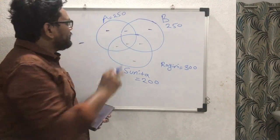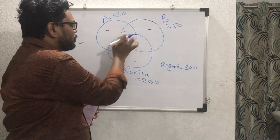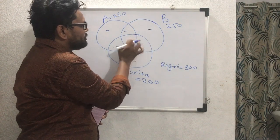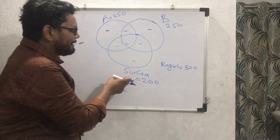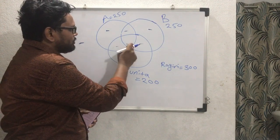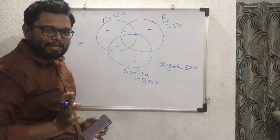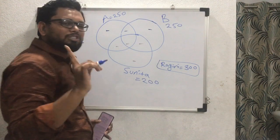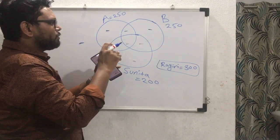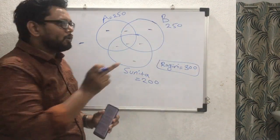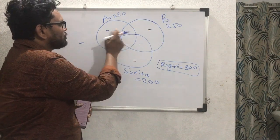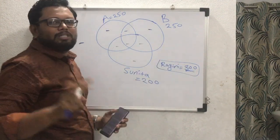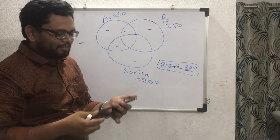Total 500 students. 250 support Proposal A — so these four regions together must equal 250. 250 support Proposal B — these four regions together must equal 250. It is mentioned that 200 students prefer Sunita, so these four regions inside Sunita's circle must sum to 200. Since total students are 500 and 200 support Sunita, Ragini is supported by 300. The four regions outside Sunita's circle (supporting Ragini) must add up to 300.